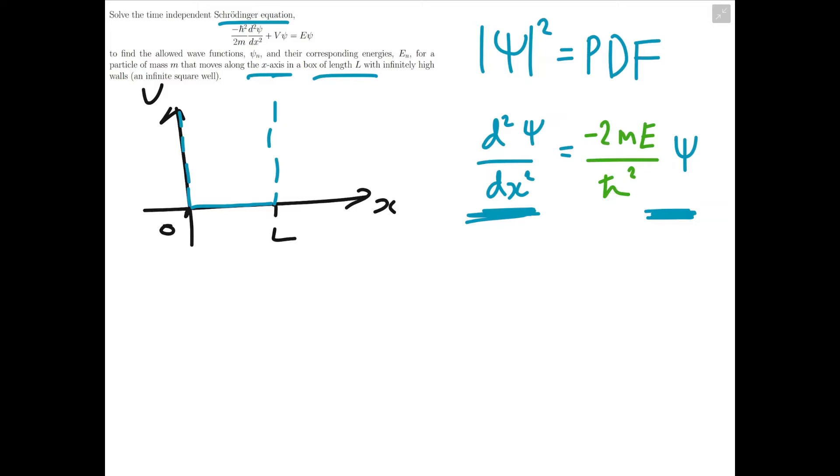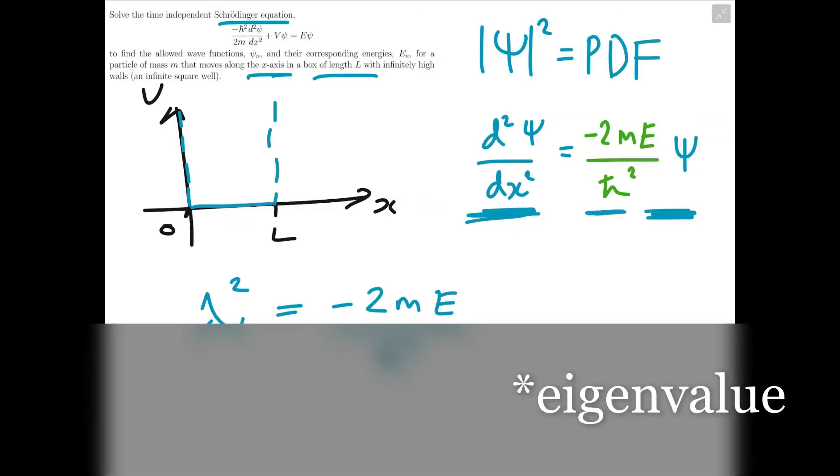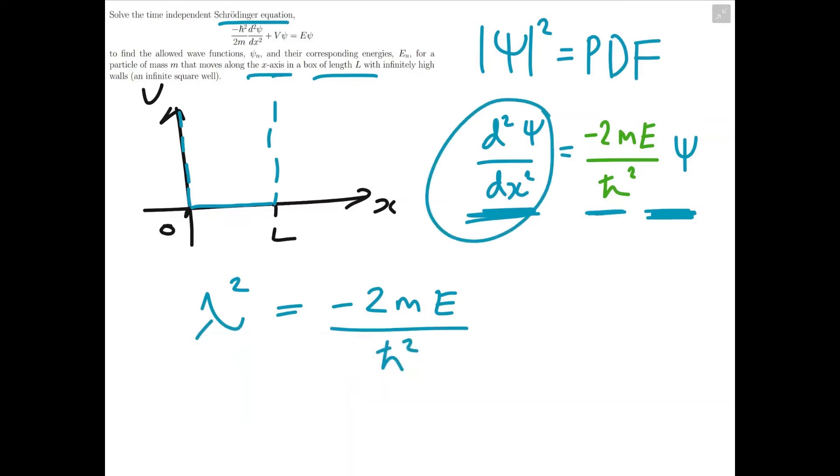So now we can solve this by writing out the characteristic equation in terms of a dummy variable, which we'll call lambda. So the characteristic equation for this differential equation would be λ² equals minus 2mE over ℏ². And the reason this is, is because this is an ordinary differential equation with constant coefficients, so coefficients that don't depend on x. You can think of it as the eigenvalue of ψ with respect to this second derivative operator.